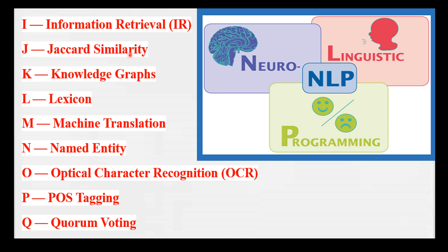K is for Knowledge Graph — a visual representation of entities and their relationships. Think of a spider diagram where nodes represent entities and lines represent their connections.